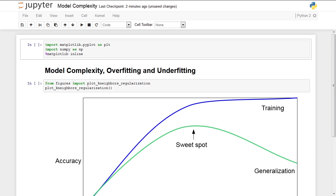In this video, we will talk about model complexity, overfitting and underfitting. The concepts of overfitting and underfitting are central to machine learning, and understanding this topic is key to creating effective machine learning models.